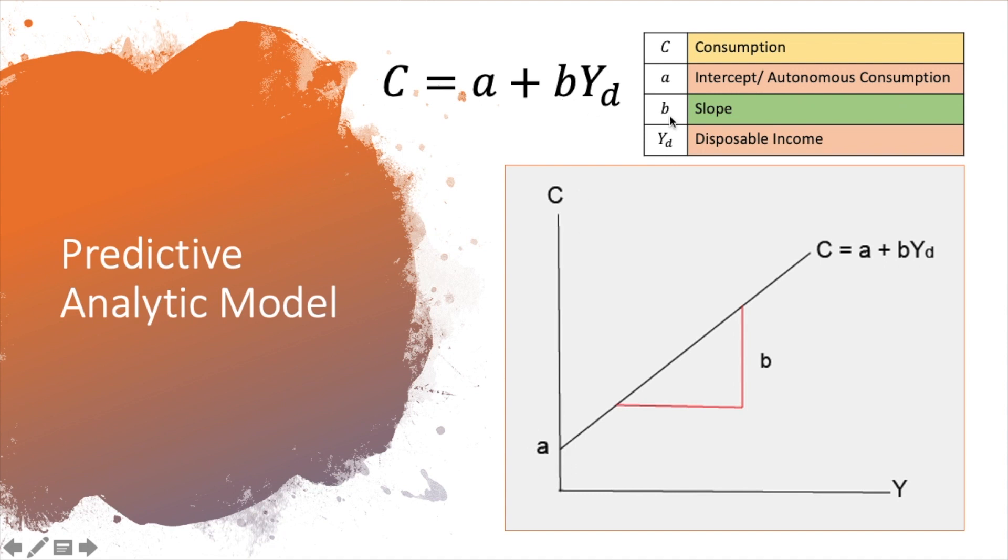B here refers to the slope. So you can see it's a straight line here and B refers to the slope. Slope here refers to changes in consumption divided by changes in income. So what are we trying to interpret over here? We want to see if income changes by one unit, it can either be in ringgit or dollar. We want to see the impact or the changes that it will incur towards the consumption.